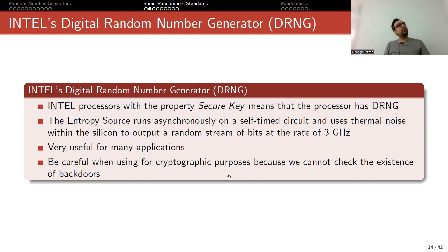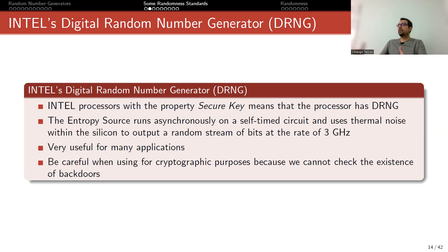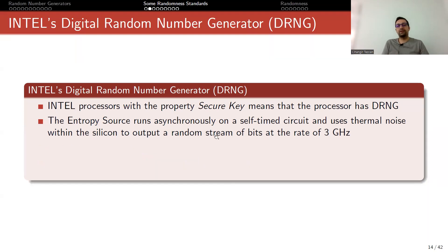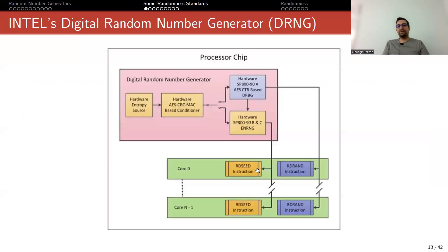Be careful when using this for cryptographic purposes, because we cannot check for the existence of backdoors. As I mentioned, if you use this random number generator and use the result as your secret key, you are trusting Intel — saying that they haven't put a backdoor in it. But we cannot check it. We cannot know if there is a backdoor inside this entropy source.